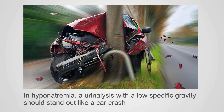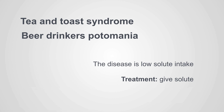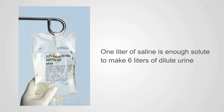When you have a patient with hyponatremia and you see a urinalysis with a low specific gravity, it should stand out like a car crash — you should lock in and pay attention, because that limits the differential to three things: tea and toast syndrome, beer drinkers' potomania, and compulsive water drinking. A single liter of normal saline provides enough solute to generate six liters of dilute urine. These patients will pour out urine as soon as you give them that saline, and their sodium will rapidly increase.